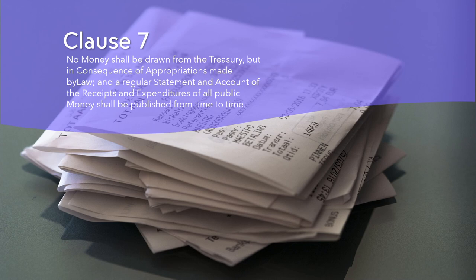The Appropriations Clause has been interpreted by the Supreme Court and lower courts in various cases involving disputes over federal spending and budgeting. Issues that have arisen include whether Congress can impose conditions on how appropriated funds are used, whether Congress can delegate its appropriations power to other entities, whether Congress can make permanent or indefinite appropriations, and whether Congress can use appropriations to regulate state activities. The Appropriations Clause is an important part of the constitutional system of checks and balances, reflecting the principle that public money belongs to the people and should be used for their benefit and welfare.